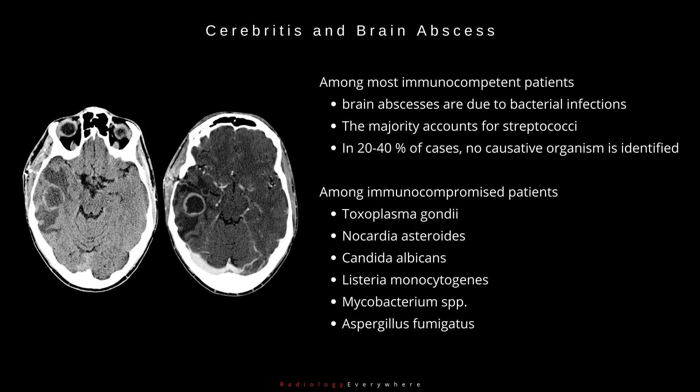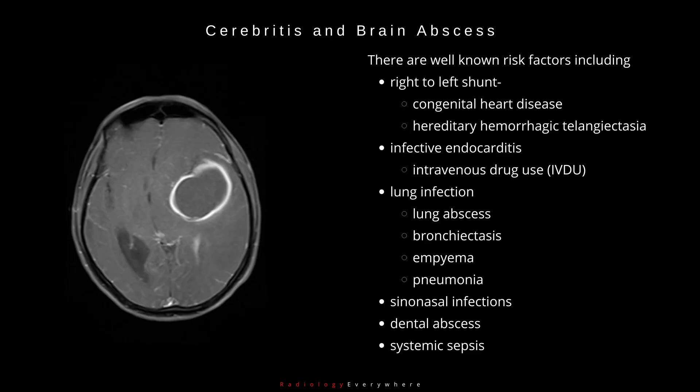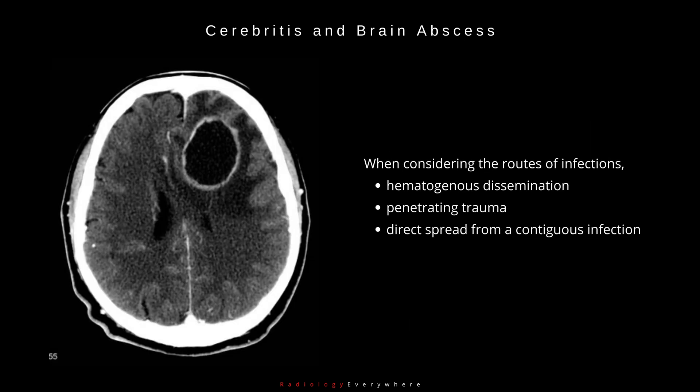Other pathogens in immunocompromised patients include Listeria monocytogenes, Mycobacterium spp., and Aspergillus fumigatus. Well-known risk factors include right-to-left shunt, infective endocarditis, lung infection, sinonasal infections, dental abscess, and systemic sepsis.